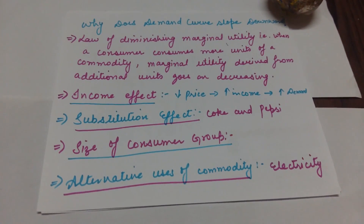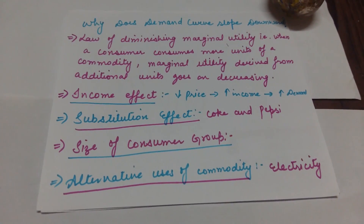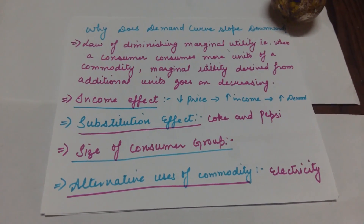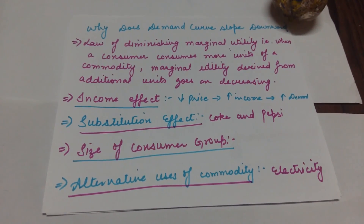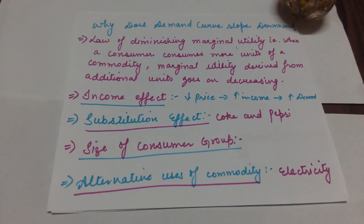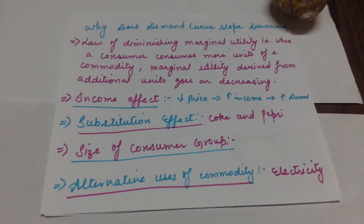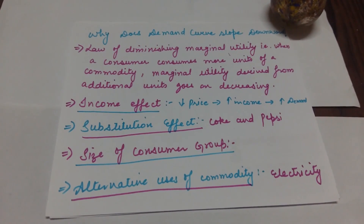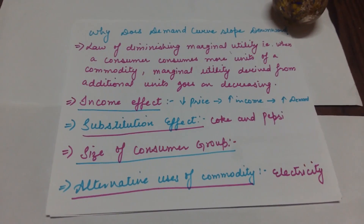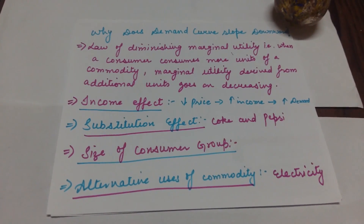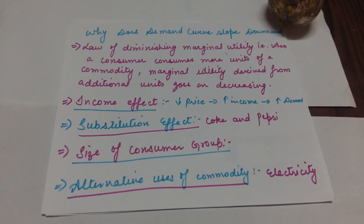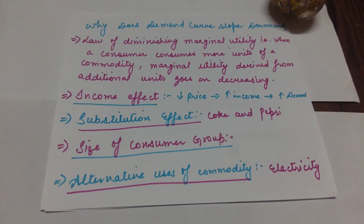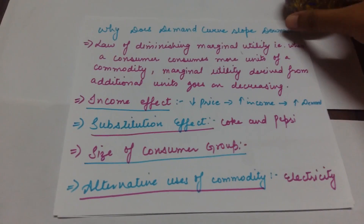Third is the Substitution Effect — for example, Coke and Pepsi. If the price of Coke is increased, you can switch to Pepsi and vice versa. Fourth, the size of the consumer group: if demand increases, the size of the consumer group can be a factor. Fifth, alternative use of a commodity — for example, electricity can have multiple alternative uses.